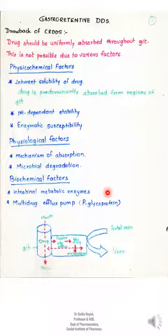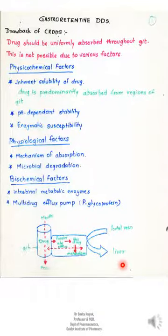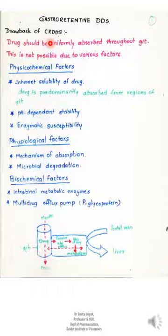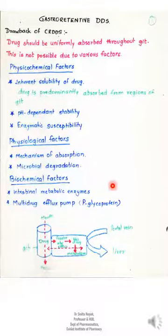Intestinal metabolic enzymes have a very big role to play in determining whether the drug is available, stable, and will be absorbed. The efflux mechanism, by which the drug as it enters the cell is immediately thrown out, is another important factor responsible for the failure of many controlled release drug delivery systems as they travel through the GI tract and encounter various environments.